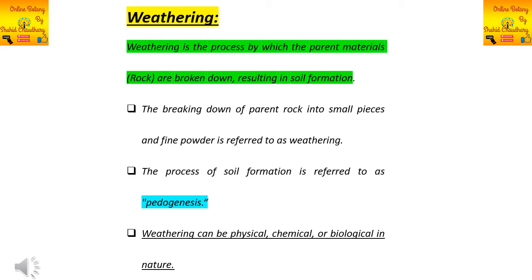First, we will define weathering. Weathering is the process in which parent materials — meaning rocks — are broken down into small pieces and fine powder, resulting in the formation of soil. So the accurate definition of weathering is: the breaking down of parent material into small pieces and fine powder.